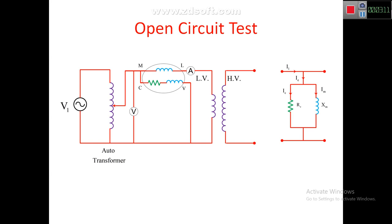All meters are connected on the LV side and the HV side is kept open circuited. In the equivalent circuit, the primary current I1 is divided into two components: exciting current IE and load component I1'. Since the secondary is open circuited, I2 equals zero, and therefore I1' is also zero. So I1 is exactly equal to the exciting current IE.